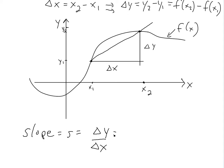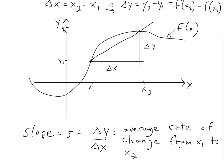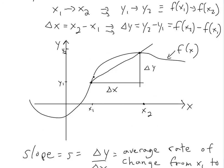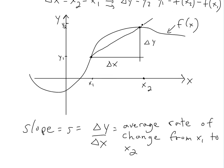This is actually equal to the average rate of change from x1 to x2. You can see the function goes really high and then low, but at the end you're at y2. If you draw a straight line from y1 to y2, this is basically the average slope — if you went this slope the whole time, you'd reach the same point. That's what average rate of change means.